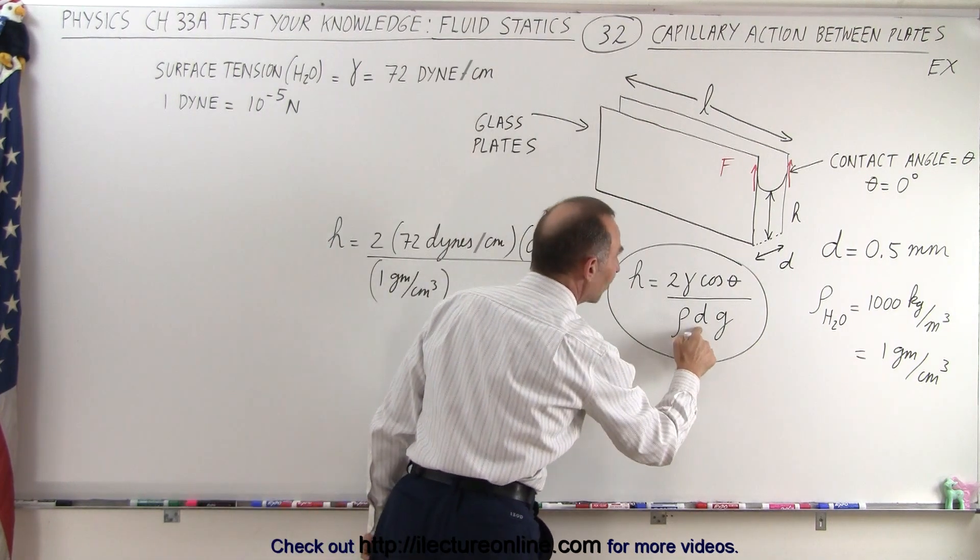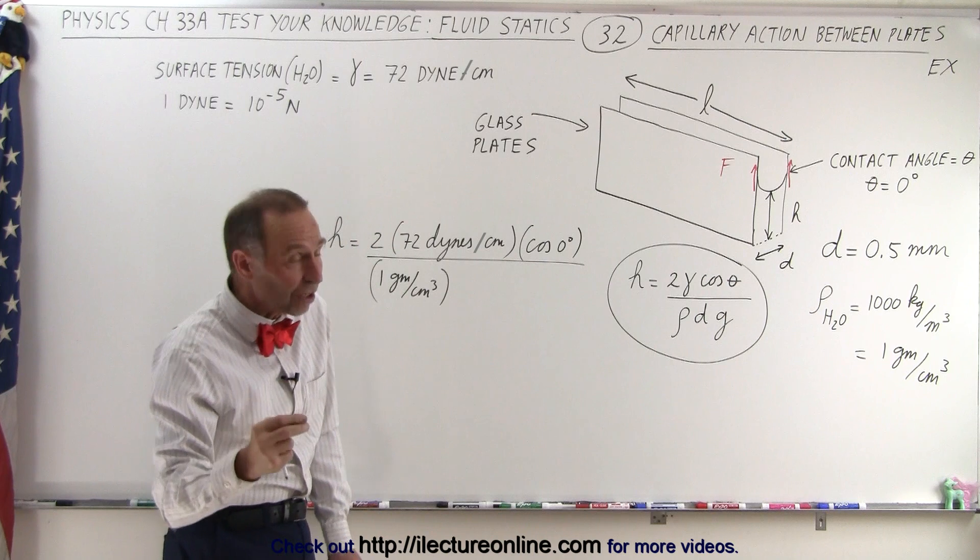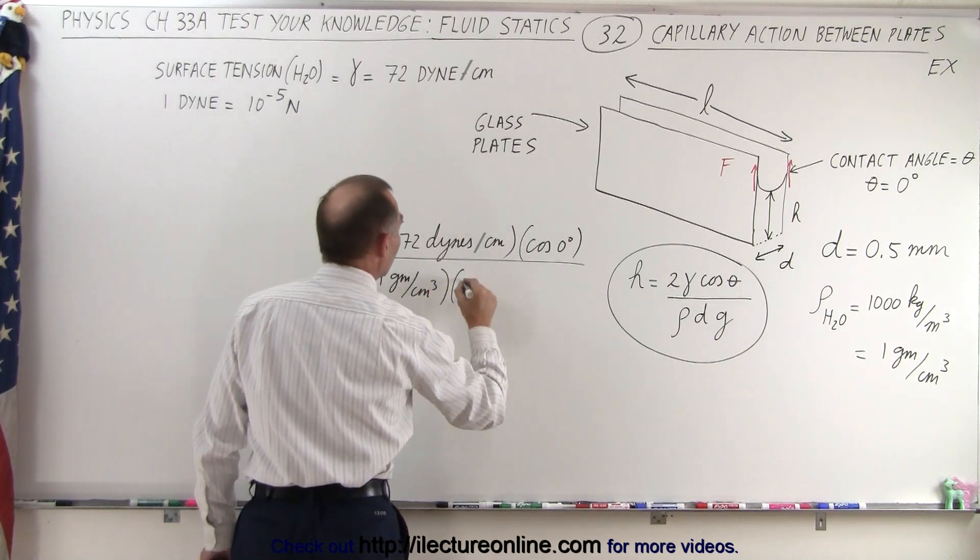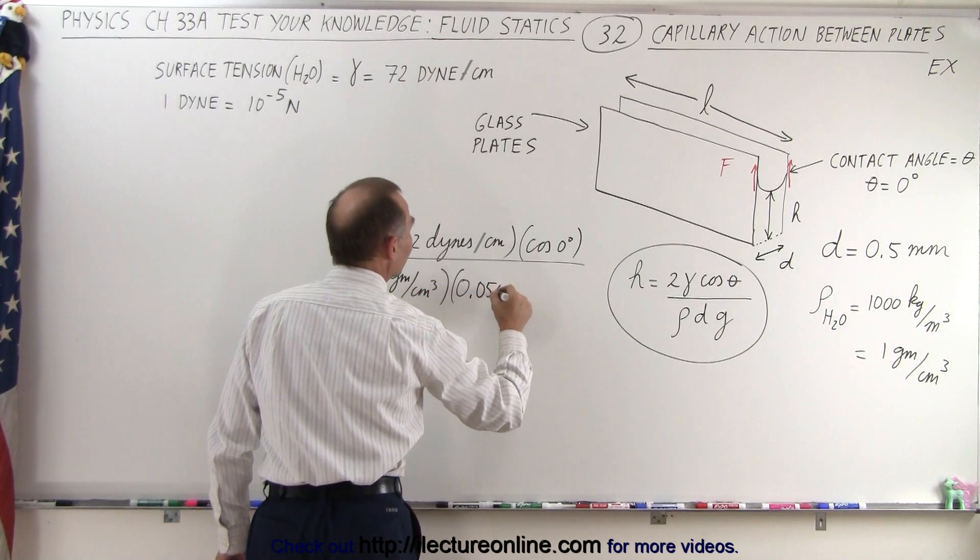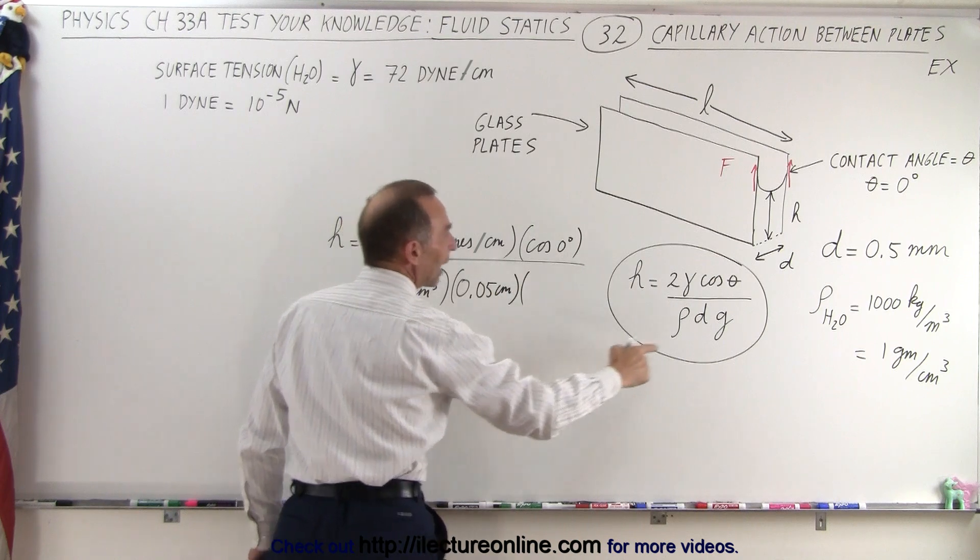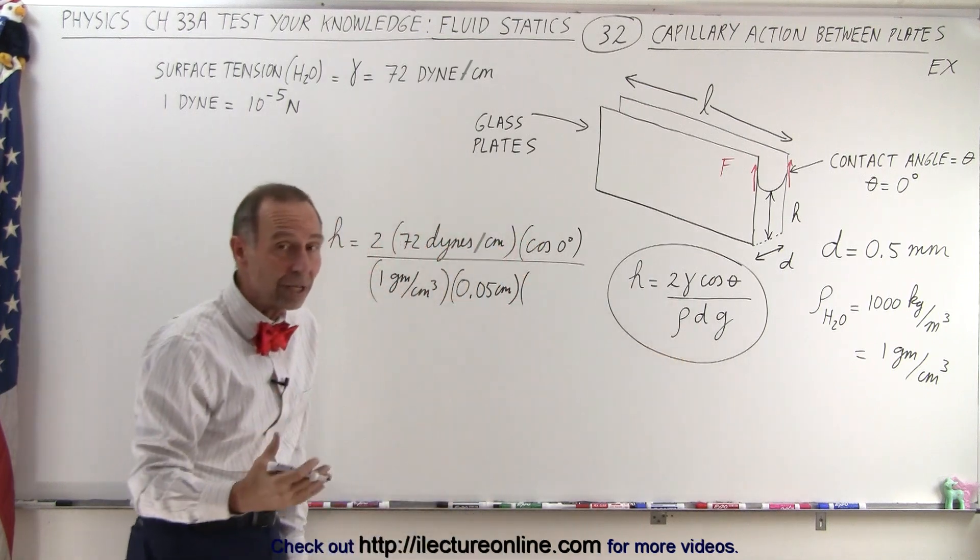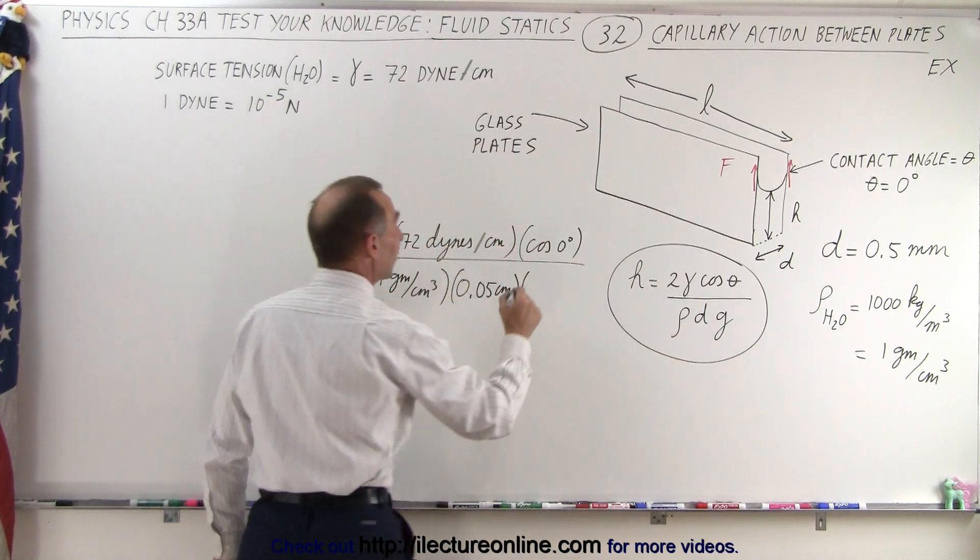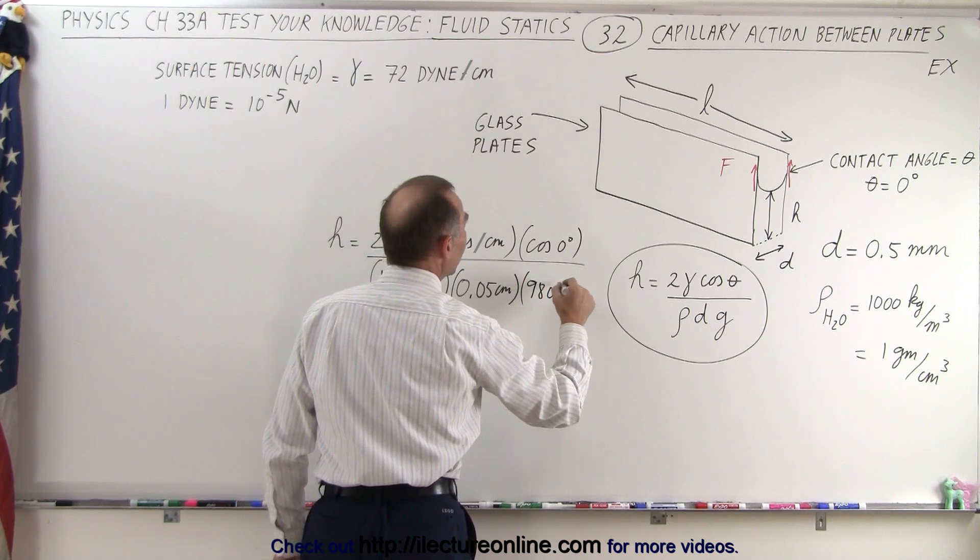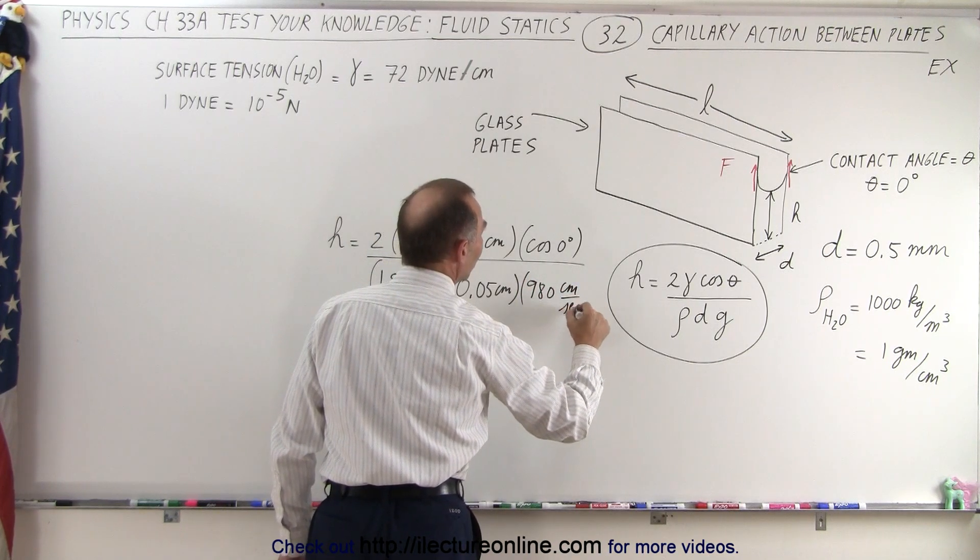Then we multiply times the distance and we have to convert that to centimeters instead of millimeters which is 0.05 centimeters. And then we have g—instead of 9.8 meters per second squared we have to write 980 centimeters per second squared.